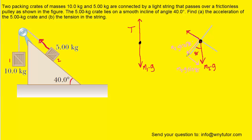Once you have your x and y components, it's a good idea to erase the original force because it tends to get in the way — we only need to deal with the components. Now, there is one more force acting on the 5-kilogram block. Because of gravity, the block is pushing down against the ramp, and in response the ramp pushes back on the block. We draw that force and call it the normal force, Fn. The normal force is perpendicular to the surface of the ramp — that's what the word 'normal' means: perpendicular.